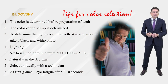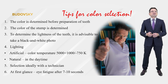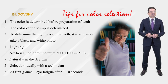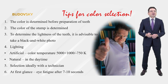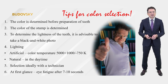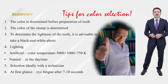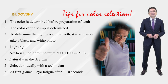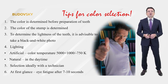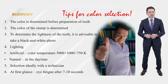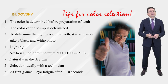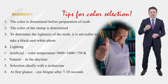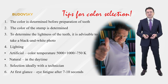A few tips when choosing color: first, color is determined before preparation of teeth; second, the color of the stump is determined; third, to determine the lightness of the teeth, it is advisable to take a black and white photo. Lighting: artificial color temperature should be 5000 Kelvins, or natural daylight — not too sunny. Ideally, color selection should be done with the technician — this is very important. Or you make a special photo and send the technician a photo with the chart. Use a first glance for choice of color, because the eye fatigues after 7 to 10 seconds.